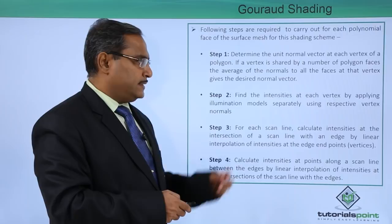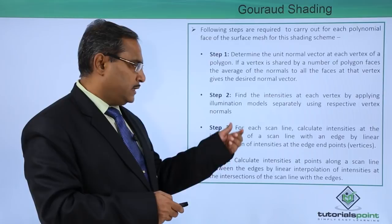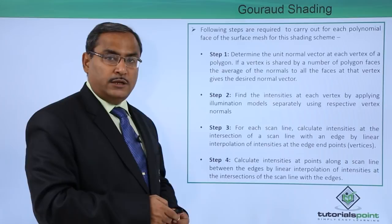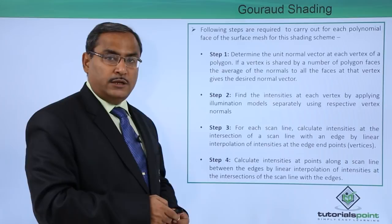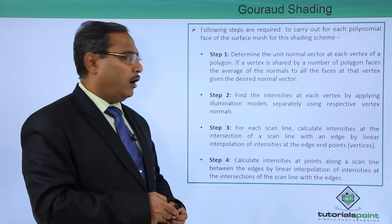Step 2: find the intensities at each vertex by applying the illumination model separately using the respective vertex normals. Step 3: for each scan line, calculate intensities at the intersection of the scan line with each edge by linear interpolation of intensities at the edge endpoints.